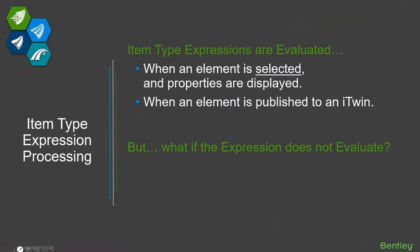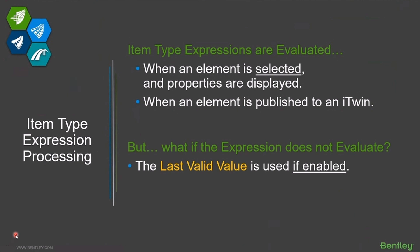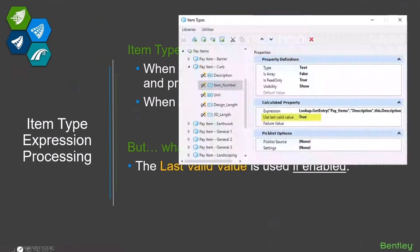So what happens if the expression does not evaluate? That's when last valid value kicks in. If it's enabled, the value stored on the element is its last valid value and that's what will be shown. If last valid value is disabled, the expression will fail — let's say it's trying to do a lookup from a spreadsheet and the spreadsheet's not there — and it'll show some sort of error saying it can't find any data to show you. That's not what you want to see.